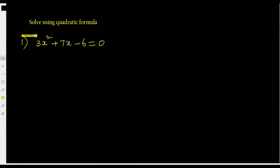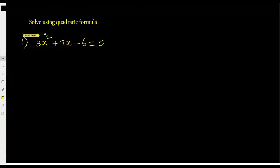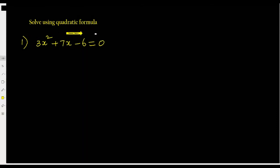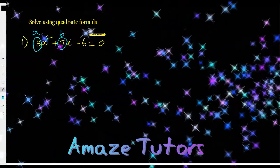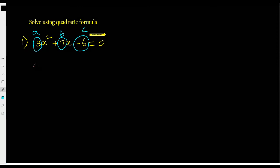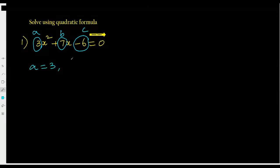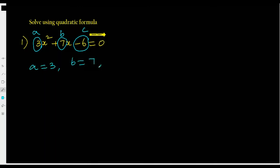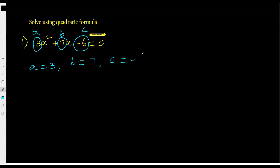Now let's solve using the quadratic formula. The given question is: solve 3x squared plus 7x minus 6 equals 0. Comparing with the standard form, a equals 3, b equals 7, and c equals negative 6.